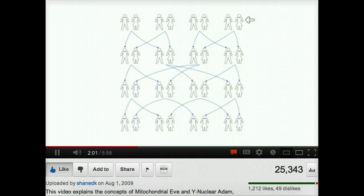Eve is not the only female common ancestor. All of the other females in the first generation are also common ancestors of everyone in the current generation. The only distinction with mitochondrial Eve is that she is the female line ancestor.